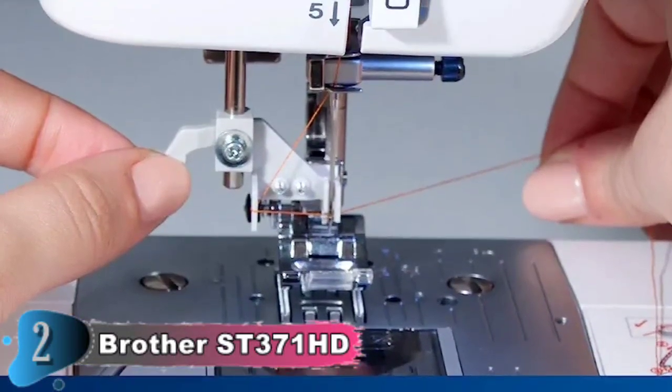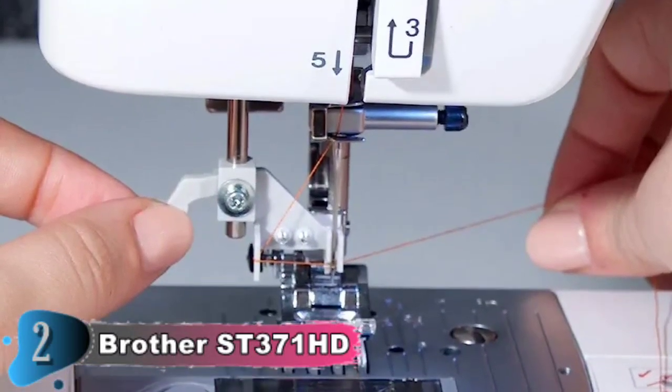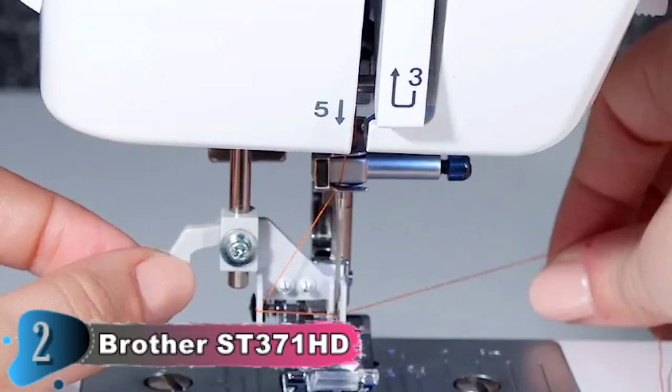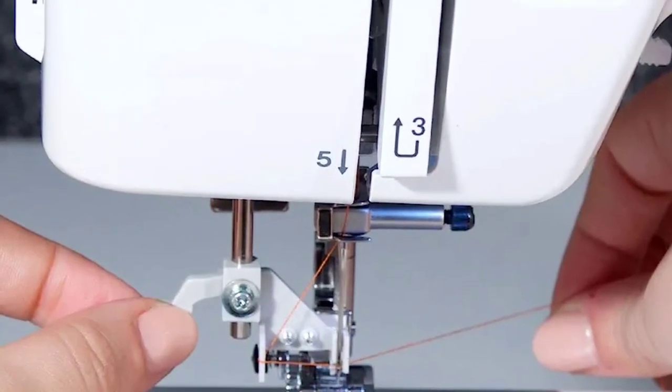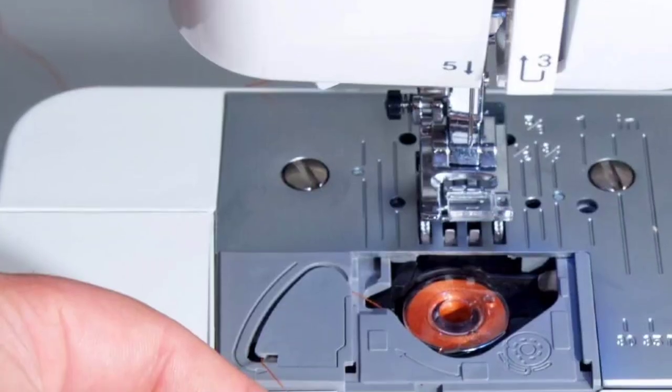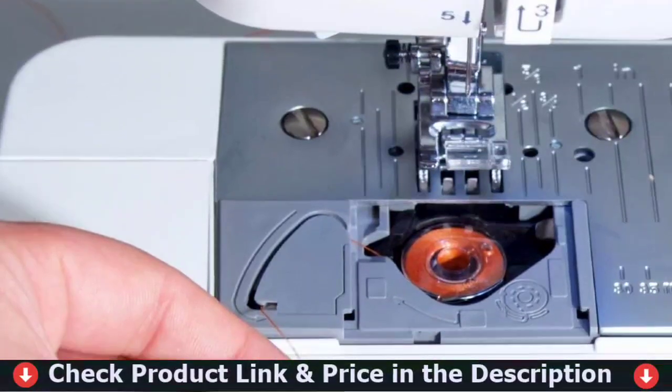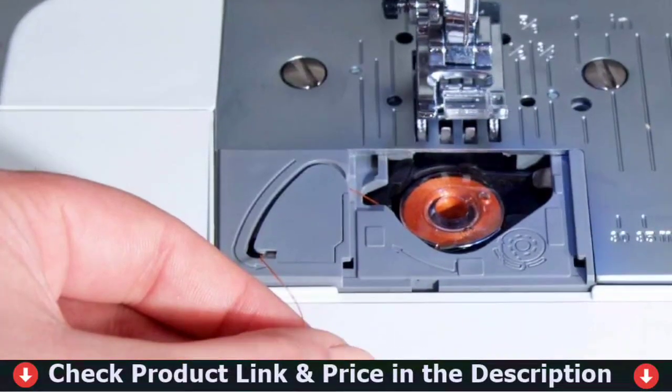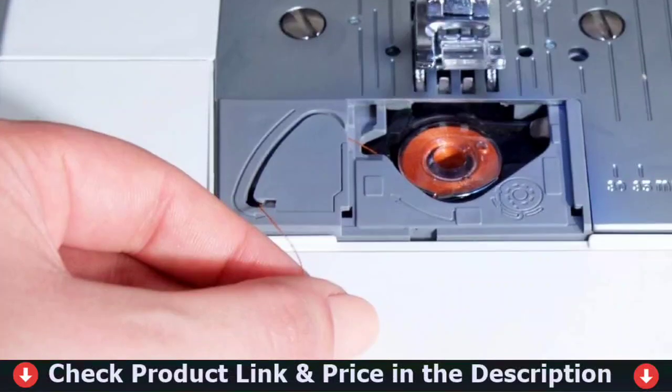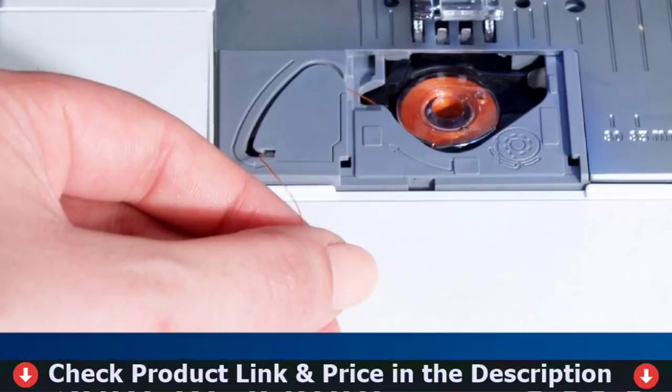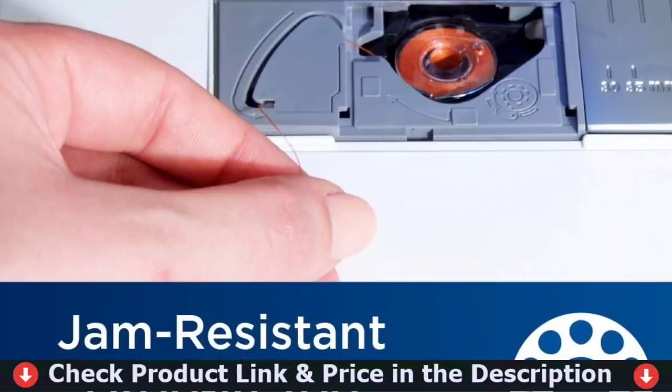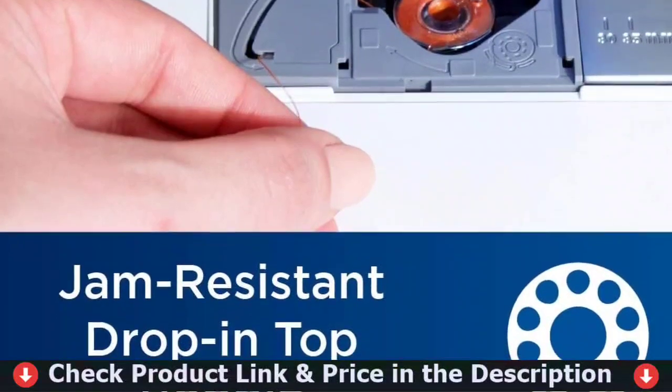The Brother ST371HD comes complete with 6 sewing feet, including a spring-action zig-zag foot and non-stick, blind stitch, zipper, buttonhole, and button sewing feet. Additionally, the drop feed feature allows you to complete free motion sewing with ease. This heavy-duty sewing machine also has a built-in easy needle threader, a jam-resistant quickset drop-in top bobbin, an automatic bobbin winding system, and a free arm for sewing cuffs, sleeves and jeans.